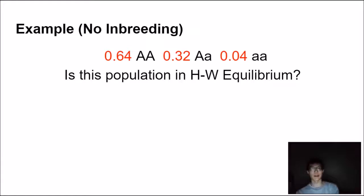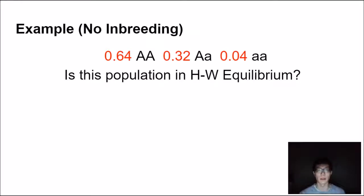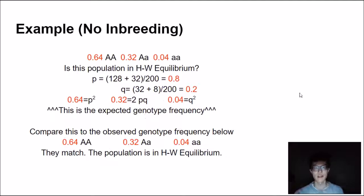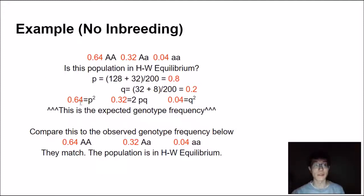Now let's look at this population: the frequency of genotype AA is 0.64, frequency of heterozygote Aa is 0.32, and frequency of aa is 0.04. The first question is: if there's no inbreeding, is this population in Hardy-Weinberg equilibrium? If you run the Hardy-Weinberg equations through, you get the exact same numbers as the original genotype frequencies — they match. So this population is in Hardy-Weinberg equilibrium if there's no inbreeding, meaning it follows the five rules of Hardy-Weinberg.